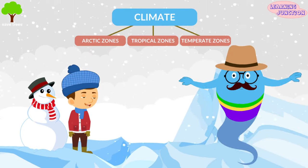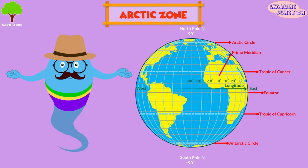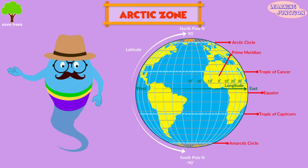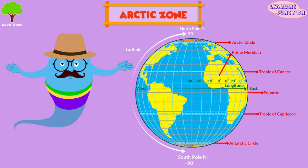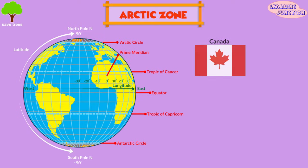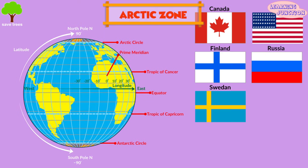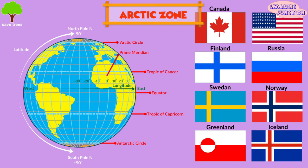Let's learn about them one by one. The Arctic zone. Arctic zones are located at the very top and very bottom of the Earth at the North and South Poles. They mainly include the northern part of Canada, the United States, Finland, Russia, Sweden, Norway, Greenland, and Iceland.